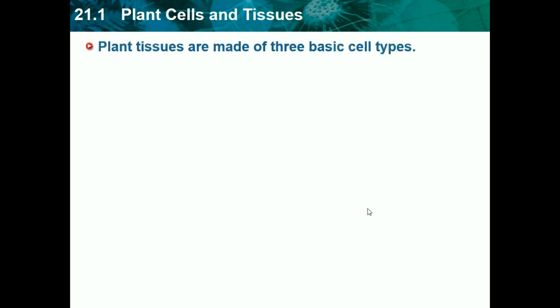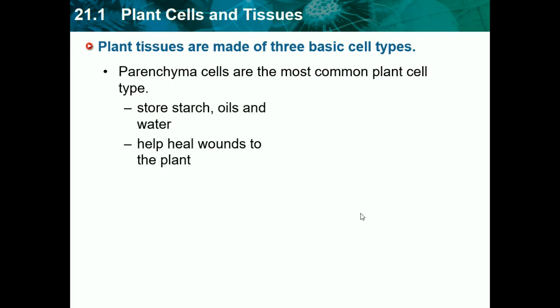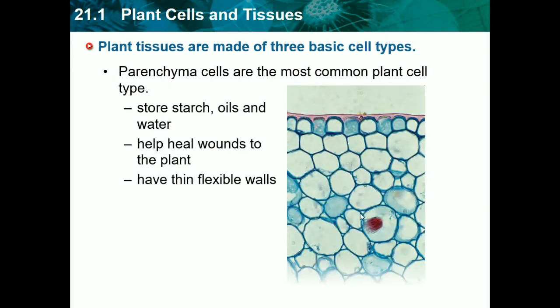Plant tissues are made of three basic cells. This chapter is very specific about plants, so you're probably not going to be asked about much of this. We have parenchyma cells, which are the most common plant cell type. They store starch, oils, and water, and help heal wounds to the plant.